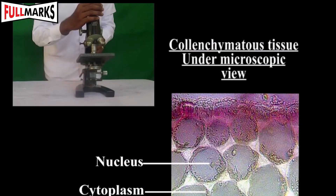Collenchyma tissues: The cells of collenchyma may be oval or elongated. Each cell consists of a central nucleus with cytoplasm at the periphery. Cell walls are thickened at the corners due to cellulose and pectin. Intercellular space is absent. These cells are commonly seen below the epidermis in petals, leaves, and stems. Their main function is to provide mechanical strength.